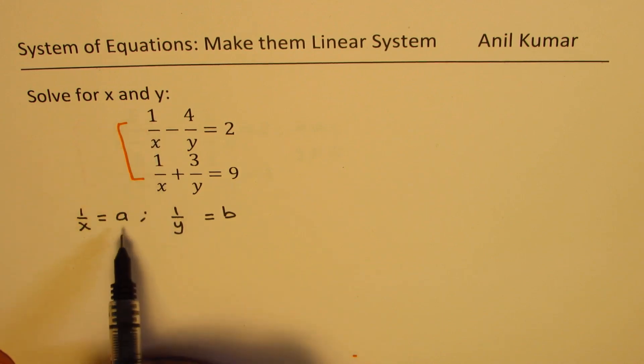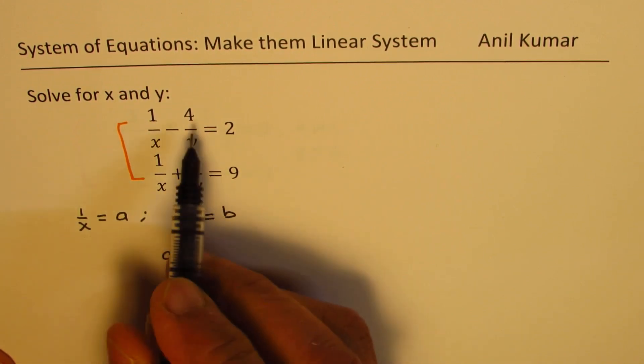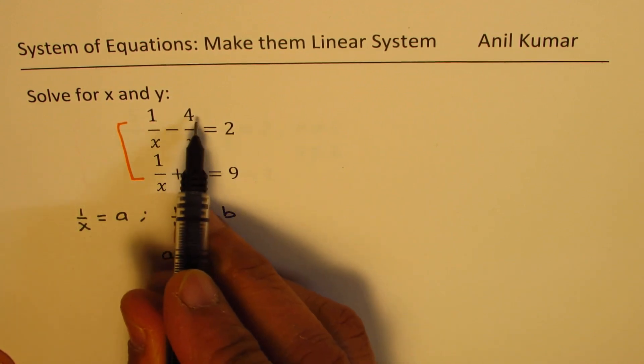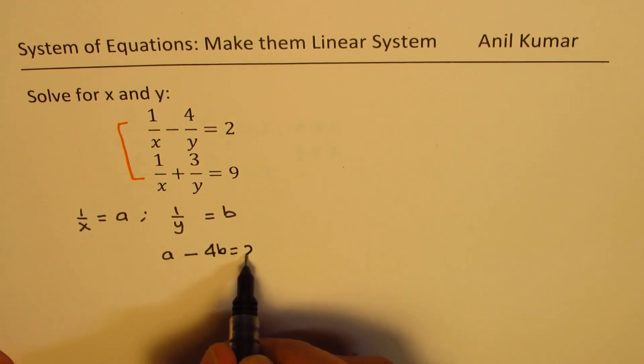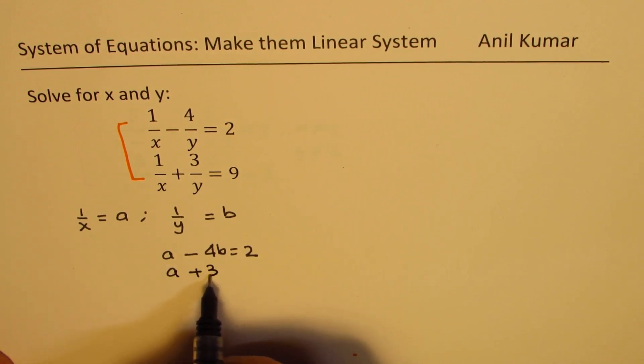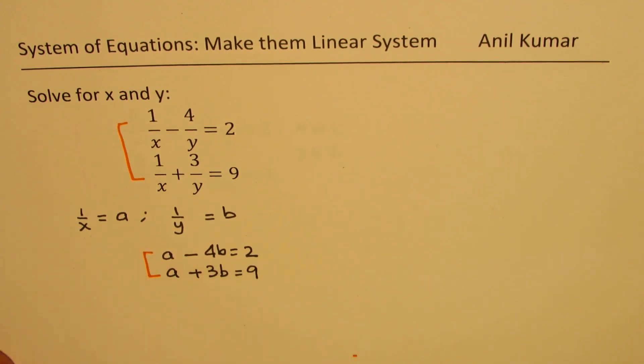If I replace 1 over x with a, the first equation becomes a minus, second equation becomes 1 over y as b means 4b, right? So it becomes a minus 4b equals 2. Putting the same substitution in the second equation, we get a plus 3b equals 9. So now we get a linear system of equations.